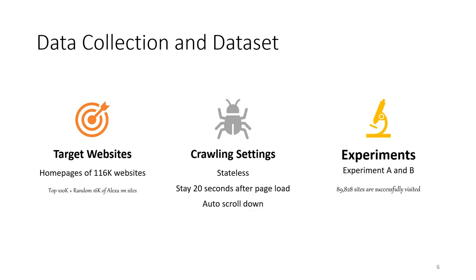With the framework introduced, let's look at our data collection experiment settings. We selected the homepages of 116k websites as our targeted websites — specifically the top 100k and a random 16k websites from the Alexa top 1 million site list. For all websites, the crawling settings were: daily crawling, a 20-second stay on each webpage after page loading, and automatic scrolling to trigger dynamic content. With the same targeted websites and settings, we ran the experiments twice, referred to as experiment A and B. In total, over 89,000 websites were successfully visited.